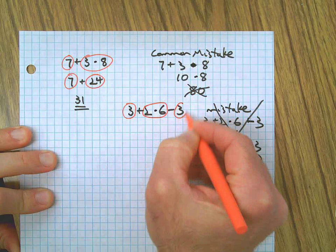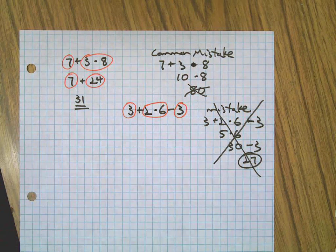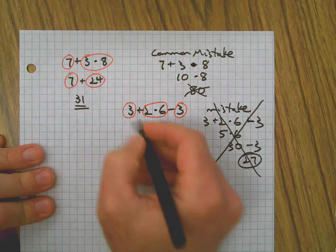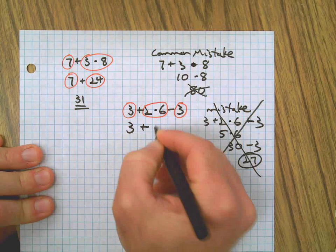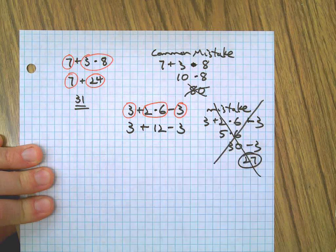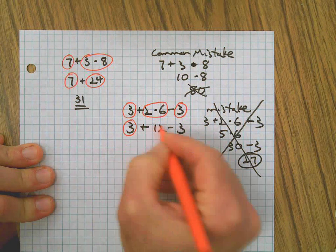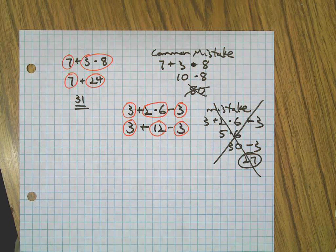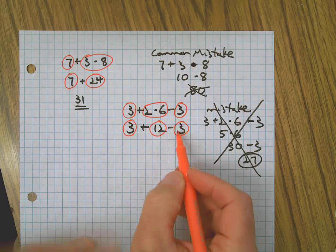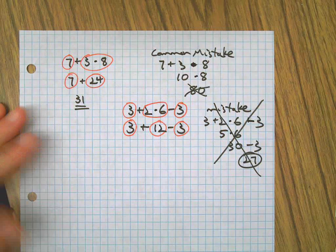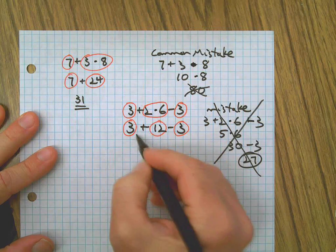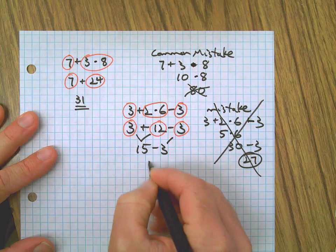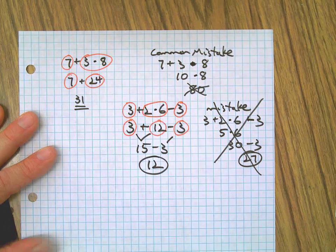First thing we're going to do: circle terms. Remember the terms are the pieces of the expression that are separated by addition or subtraction signs. Do the work in each circle. Since we're in the learning process here, I'm still using the circles, but you can see what a nice visual it is. 2 times 6 is 12, so there's 3 and 12, take away the 3, so 12 is the right answer.